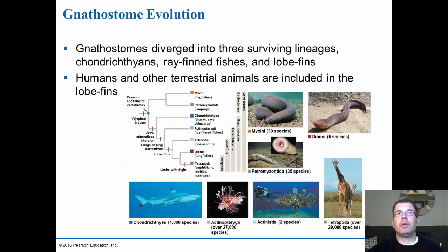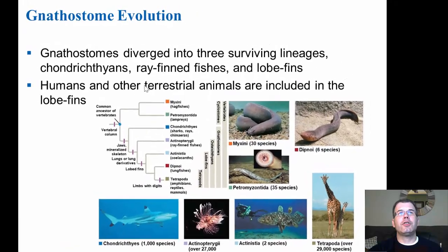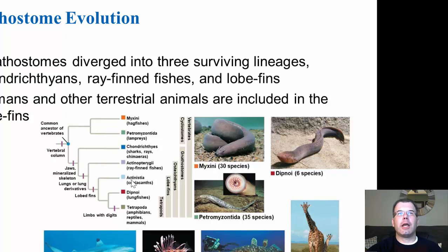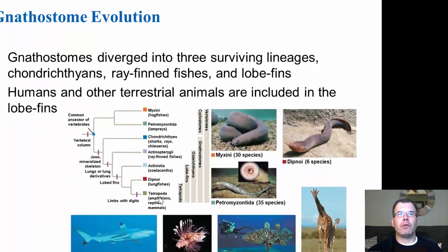The gnathostomes diverge into three surviving lineages: the chondrichthyans (cartilage fish), the ray-fin fishes, and the lobe fins. Humans and other tetrapods are included in the lobe fins because we came from the water via the lobe-fin fishes. The three groups are the chondrichthyans (cartilage fish), the ray-fin fishes (actinopterygii), and the lobe-fin fishes, which include the coelacanths, the lungfishes, and the tetrapoda — four-limbed animals on land.